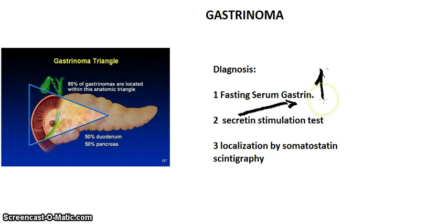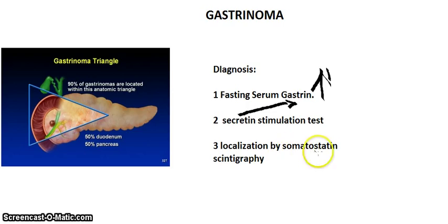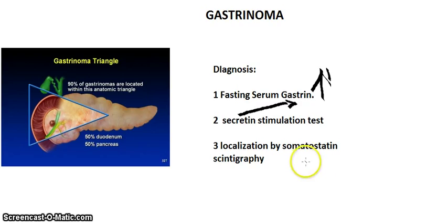Third, remember that most neuroendocrine tumors contain somatostatin receptors. So you label somatostatin and then check imaging — the labeled somatostatin will attach to the receptors on the gastrinoma tumor, allowing you to find the location of it.